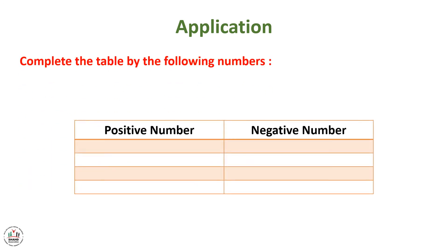Now let's solve this simple application. Complete the table with the following numbers: plus 14, minus 12, plus 20, plus 30, minus 1, plus 3. So we should classify these numbers either in the positive number column or in the negative number column.